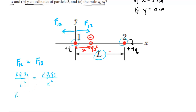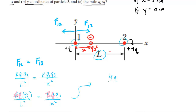Substituting known values: Q1 equals Q and Q2 equals 4Q, so the left side becomes K times Q times 4Q over L squared. On the right side, Q1 equals Q, and Q3 remains unknown, giving K times Q times Q3 over x squared. Canceling the K's and Q's on both sides, we get 4Q over L squared equals Q3 over x squared.